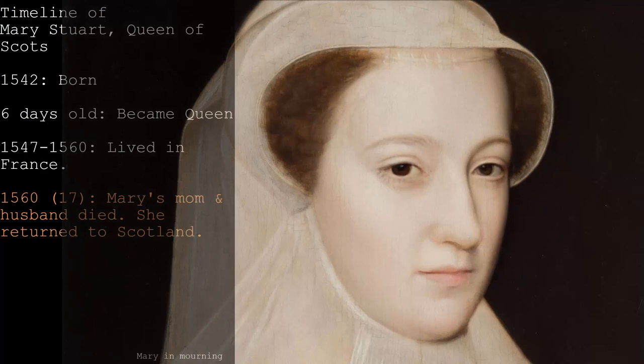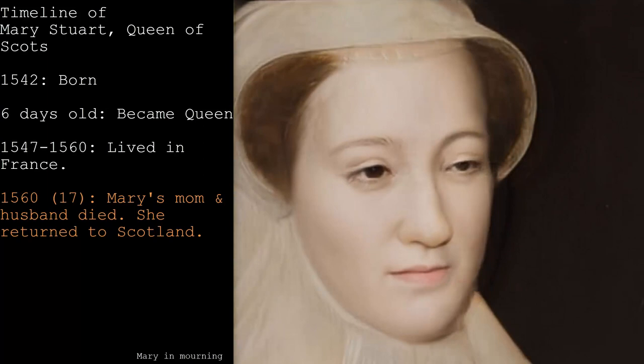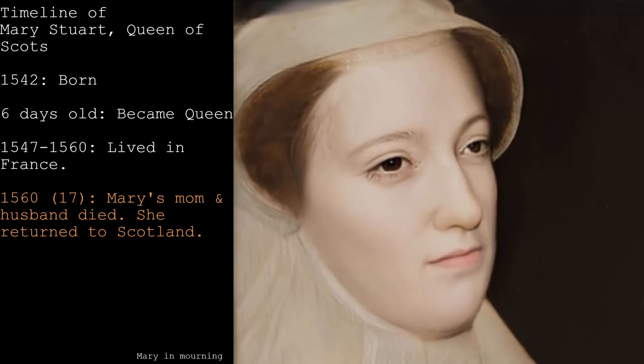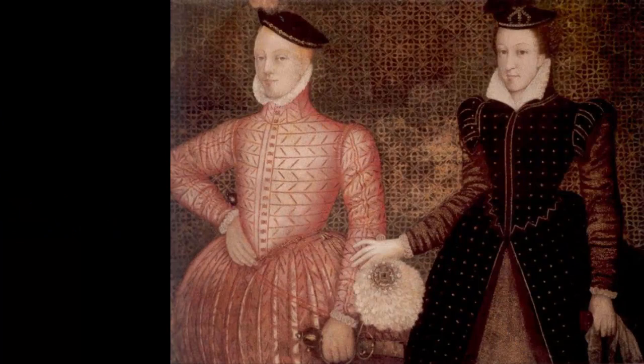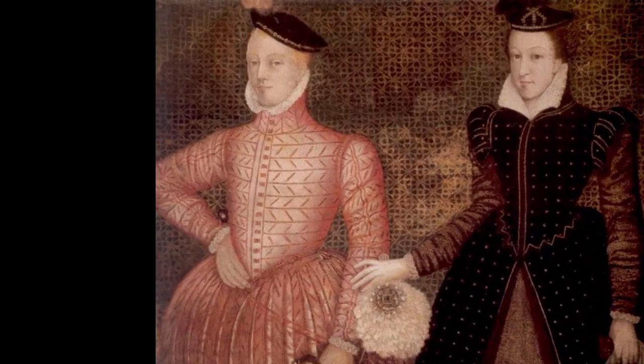Elizabeth was impressed that Mary was received with a warm welcome. Catholic Mary tolerated the Protestants and even appointed Protestant leaders. Mary quickly remarried — her first cousin Lord Darnley. But their marriage began to turn toxic: he wanted more power than a king consort, and he even killed her favorite servant in front of her while she was pregnant.